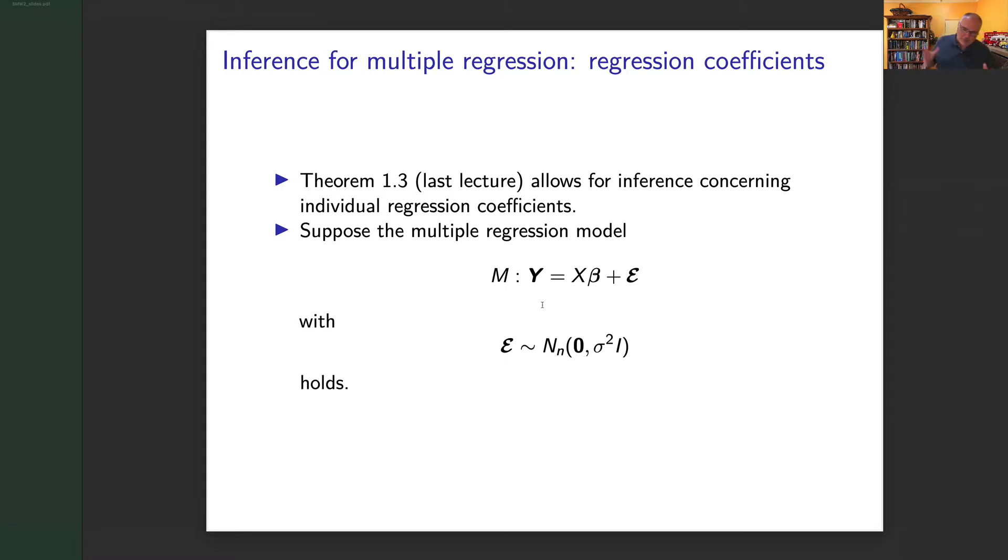We're going to talk about inference for multiple regression. That is, you've estimated your betas—can we make decisions about those betas? Let's recap. We've got our multiple regression model Y = Xβ + ε. The epsilons are normally distributed with mean zero and variance σ² and they are independent.